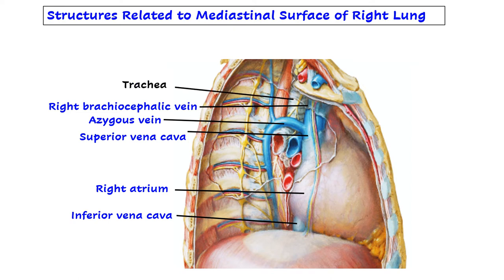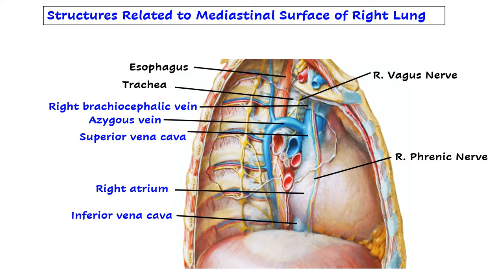Now we have two tubes which will come in relation: the trachea and the esophagus. Two nerves: the phrenic nerve, which is more anteriorly placed and goes anterior to the root of the lung, and the vagus nerve, which is more posteriorly placed. These are the structures related to the mediastinal surface of the right lung.